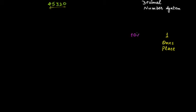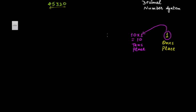The tens place has a value of ten multiplied by the value of the previous one, which is one, giving ten. Therefore it is called the tens place. The next place has a value of ten multiplied by the value of the previous place, which is ten, so ten multiplied by ten becomes hundred. Therefore it is called the hundreds place.